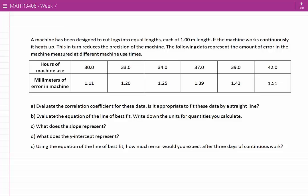A machine has been designed to cut logs into equal lengths, each of one meter length. If the machine works continuously, it heats up. This in turn reduces the precision of the machine. The following data represent the amount of error in the machine measured at different machine use times.